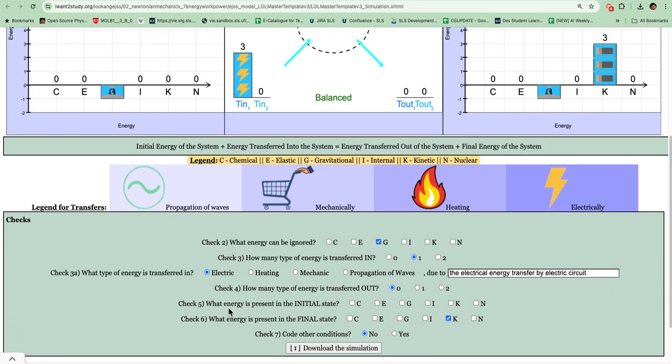Check number five is what energy is present in the initial state. Since there are none, I will not select any of them. If you want to have some elastic potential energy, you must make sure that this is selected. Check number six is what energy is present in the final state, so it is the kinetic energy store that must have non-zero value.